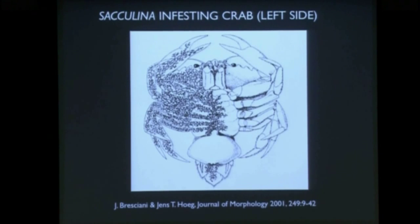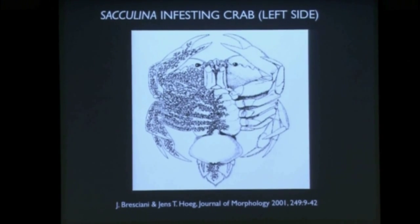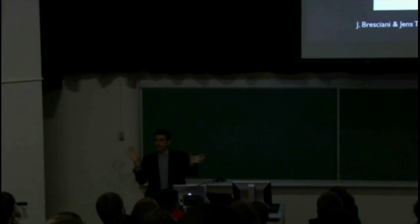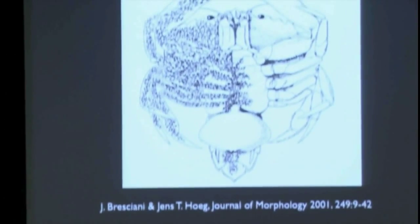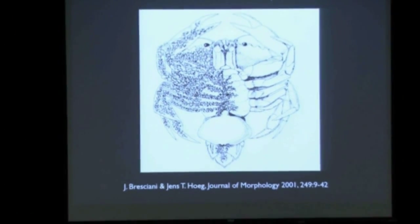Instead of developing into something that looks like a shrimp or a lobster, they turn into something pretty weird. They grow into a mass of cells, which then grows roots that go out and basically fill up the crab's whole body. Crabs have an exoskeleton, so inside it's all just muscle and juice, just organs — so it's kind of easy for a parasite to infiltrate the whole thing.